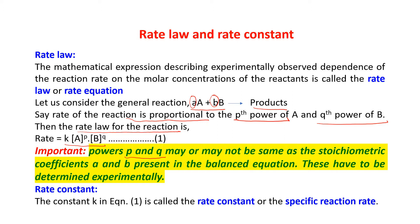What is rate constant? The constant K in the rate equation is the rate constant, also known as the specific rate constant. This rate constant is specific for a specific order of reaction, as we will see in the following slides. So it is known as the rate constant or specific rate constant.